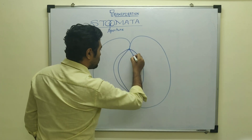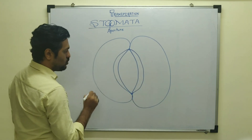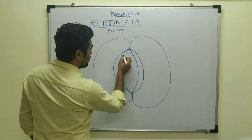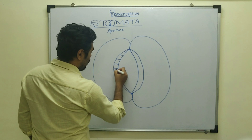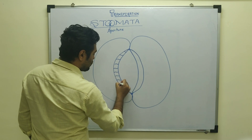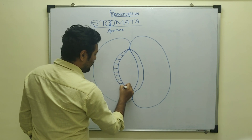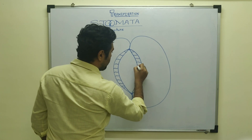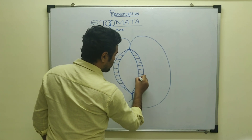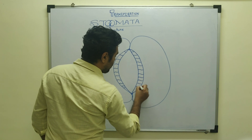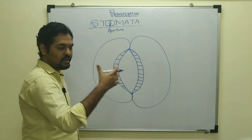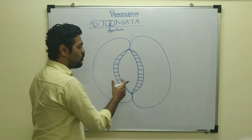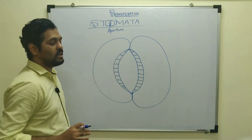The guard cell has a thick inner cell wall. This thick wall is due to secondary cell wall deposition. As we discussed in cell biology, there are different types of cell walls — primary, secondary, and tertiary — and this inner wall is a thick secondary cell wall.